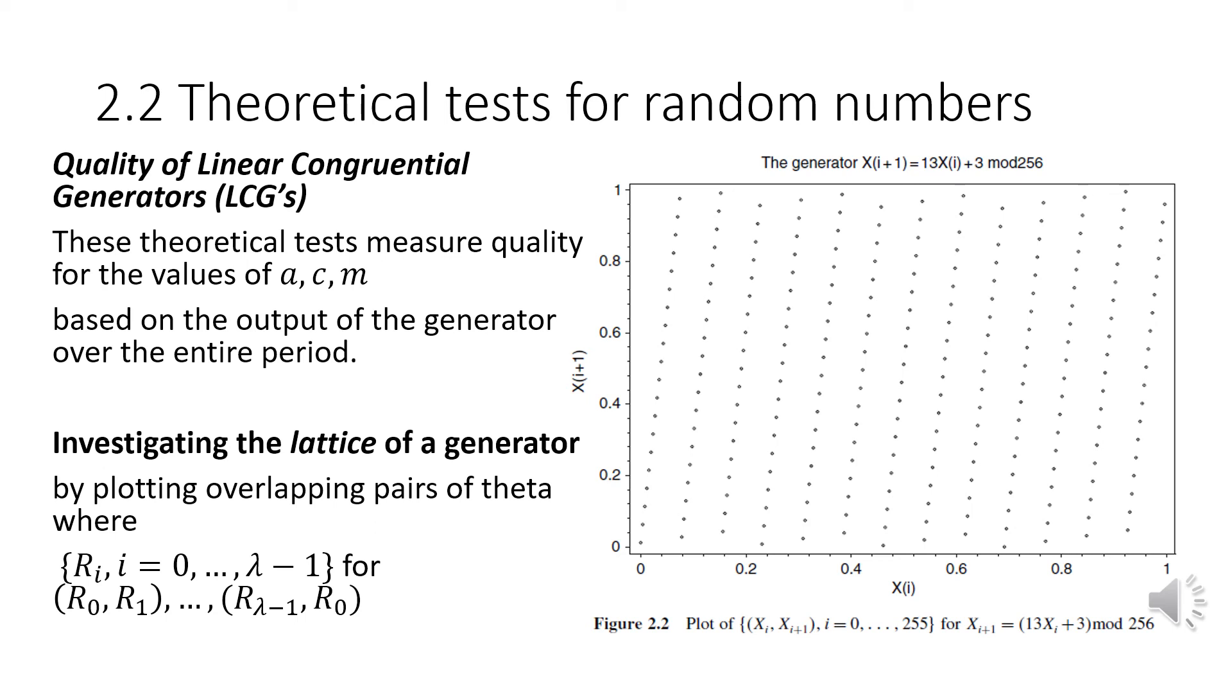This detracts from the uniformity of the generator, therefore decreasing the quality. The quality of a generator is measured by the uniformity of its distribution of values between zero and one. Unfortunately, this is unavoidable for all linear congruential generators. However, preferably the more lines necessary to cover every single point on this overlapping plot, the greater the uniformity in the random numbers.